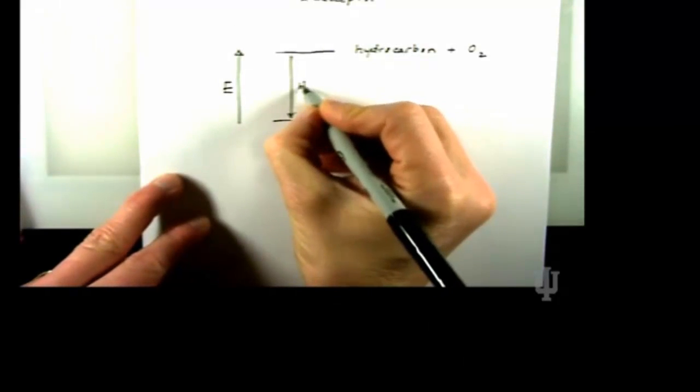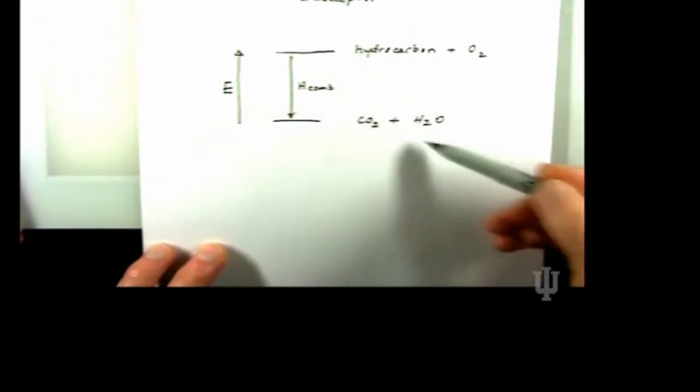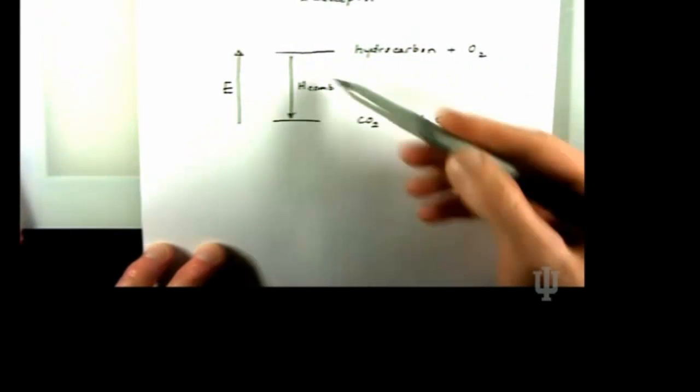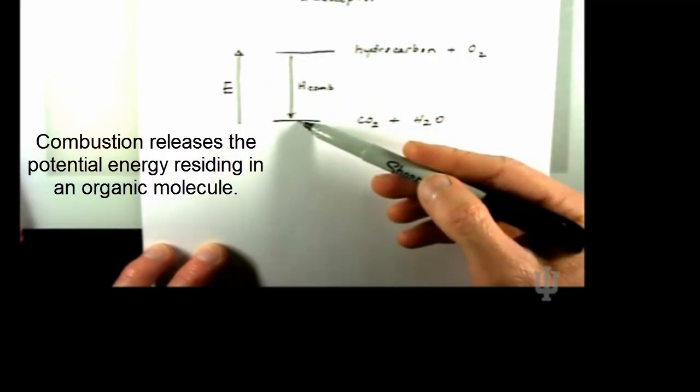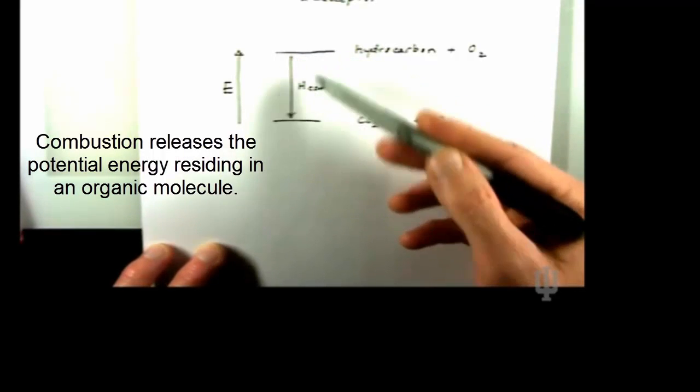I'll put an energy scale on the left side here. Energy increases as you go up on the screen. The heat of combustion that's released is the amount of heat that's given off as you convert hydrocarbon and oxygen to CO2 and water. You move from less stable molecules to more stable molecules as you go down the figure.